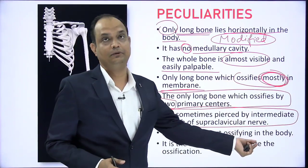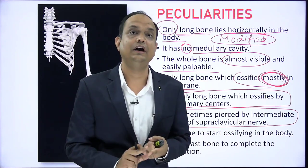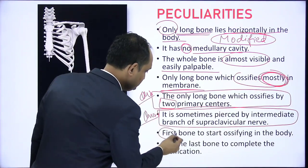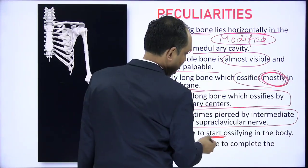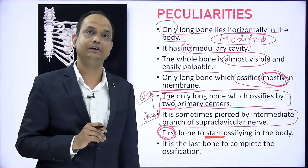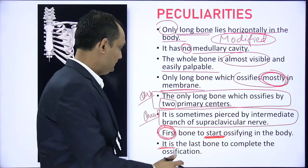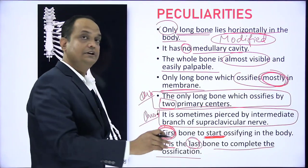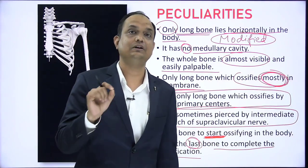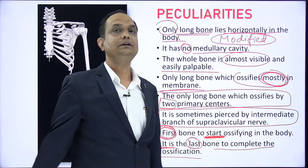The clavicle is the first bone to start ossifying in the body. The question is not which bone is completely ossified at birth, but which bone starts ossification earliest — and the answer is the clavicle, at around the fifth or sixth week of intrauterine life. Its ossification continues until around 20 years of age. So it is also the last bone to complete ossification at around 20 to 21 years of age. Name the bone that starts ossification first — clavicle. Name the bone that completes ossification last — again, the clavicle.